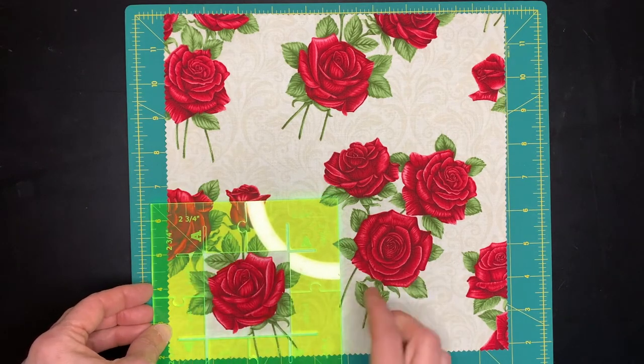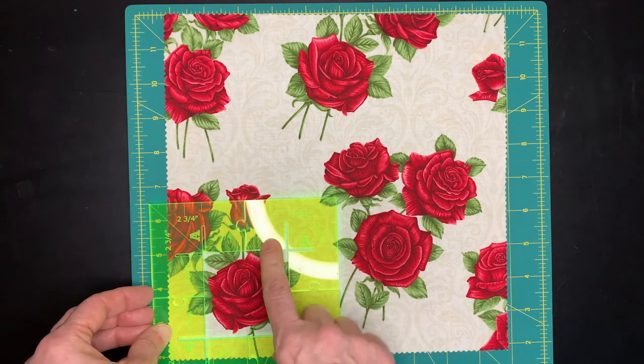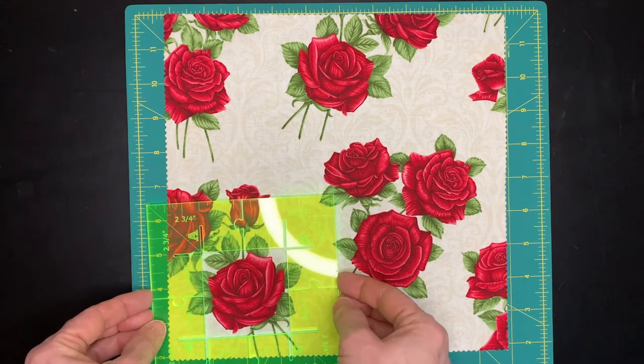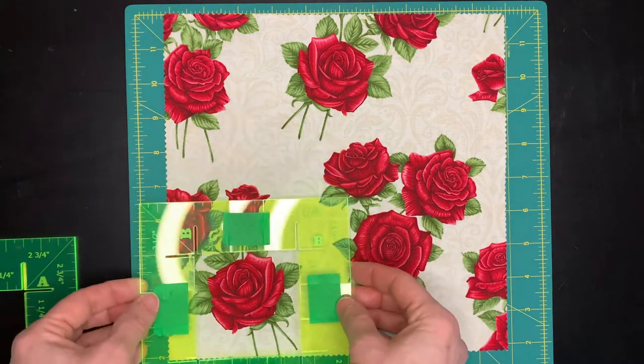So this is perfect. However, we have a quarter inch seam allowance. So we probably don't want this to be two and a half inches. We probably want this to be three inches. So I'm going to switch this over to B blocks.